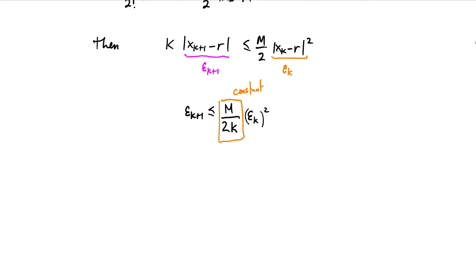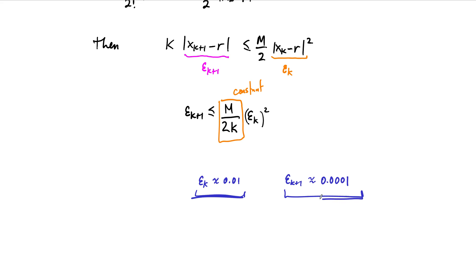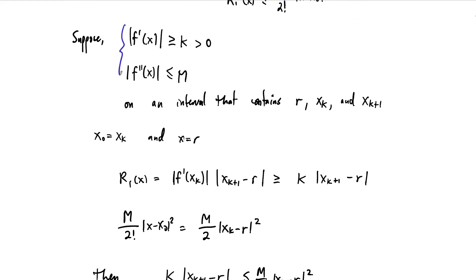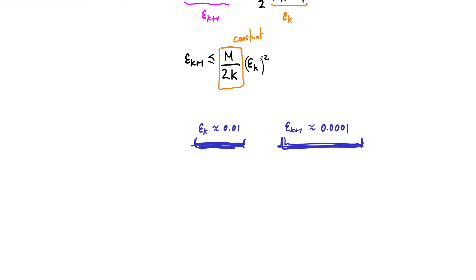This constant M over 2k is fixed, so ignoring it: if the error in the kth step was about 0.01, then the error in the k plus 1 step is about 0.01 squared, which is 0.0001. It doesn't take many steps to get within a few decimal places. As long as you make a good first approximation and apply Newton's method, you'll reach the root quickly. Under these hypotheses, the magnitude of the error is essentially squared from one step to the next — this is quadratic convergence.